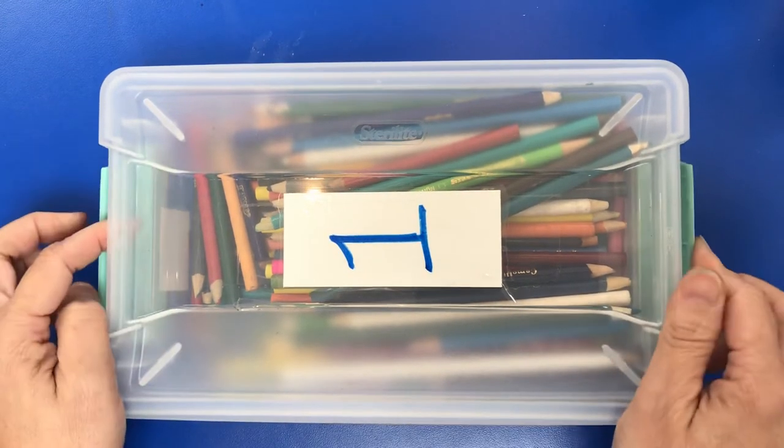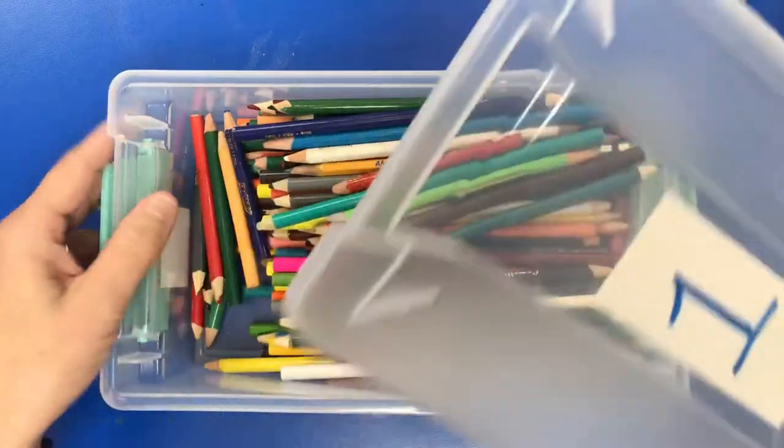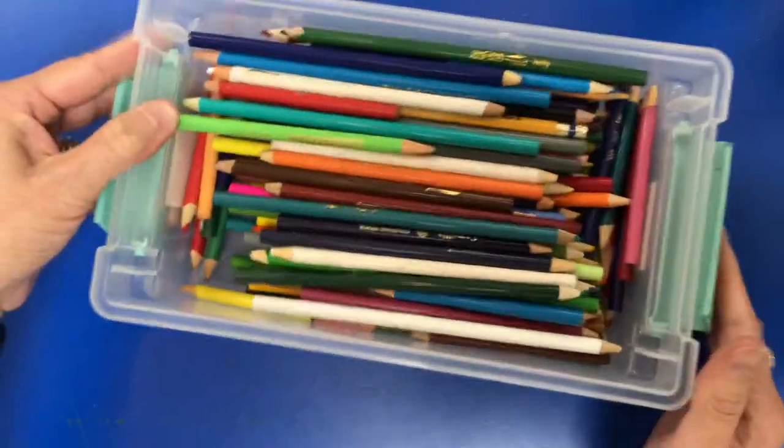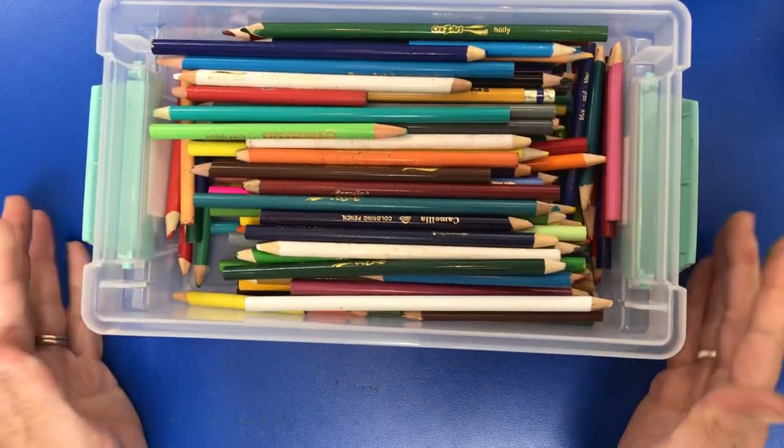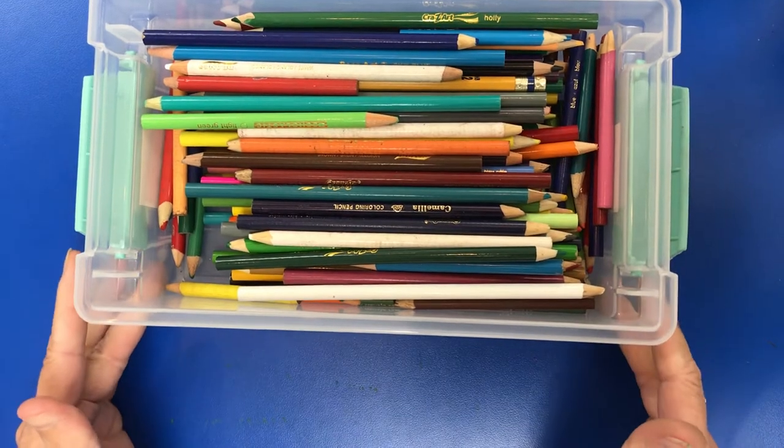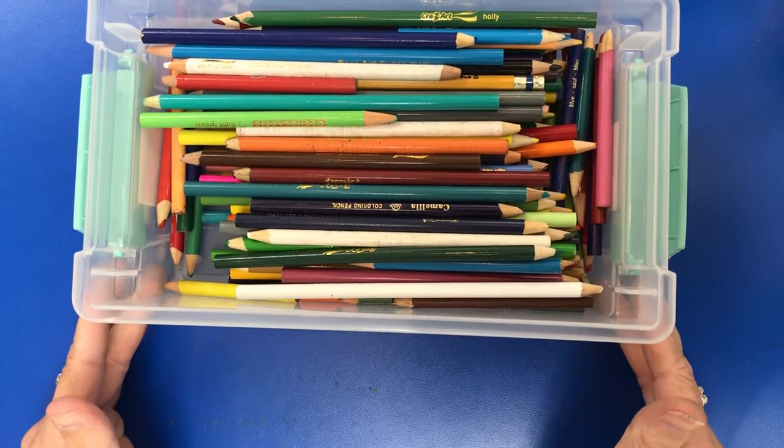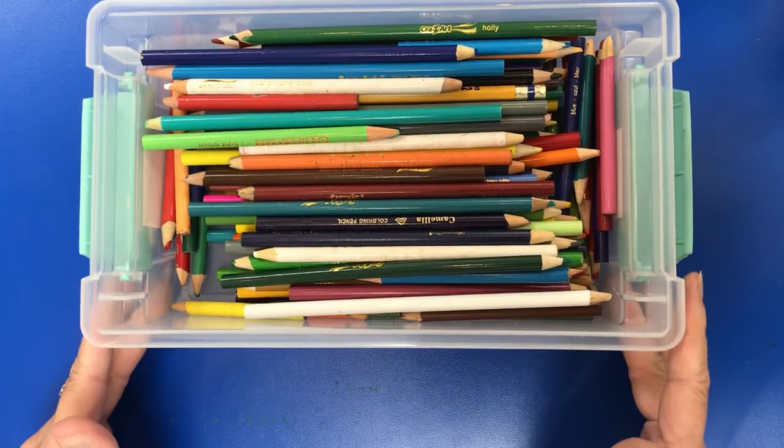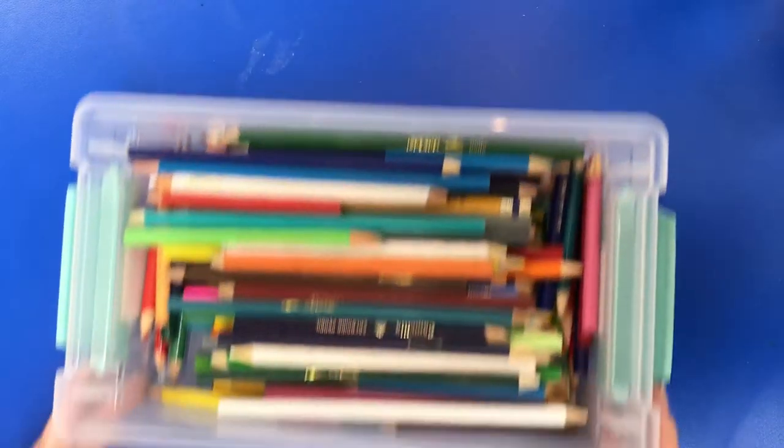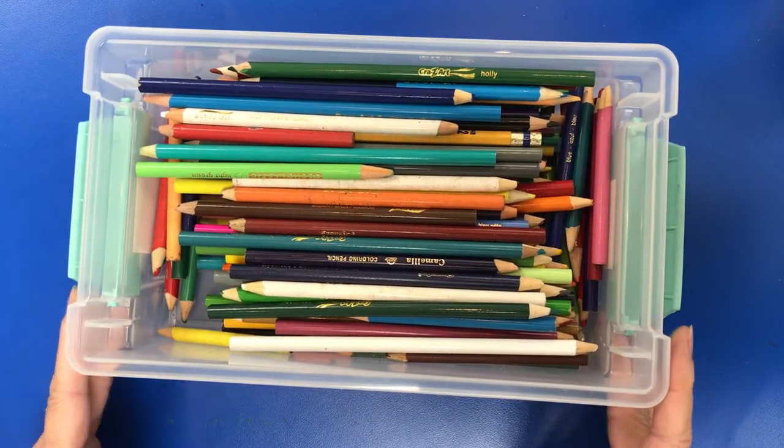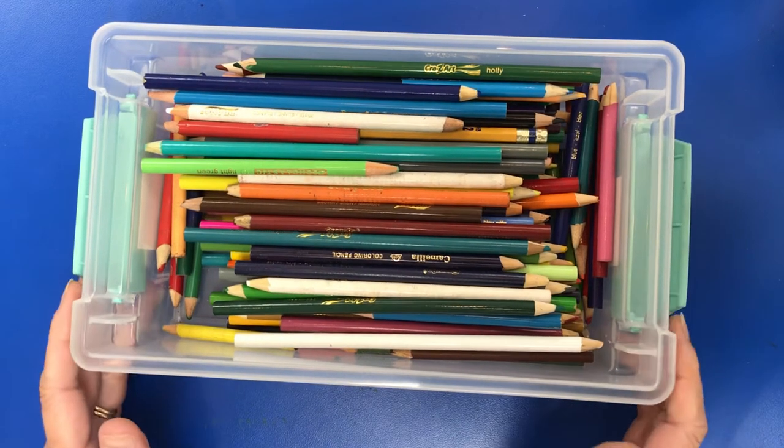When you get to your table, you're going to unlatch them and take the cover off. The cover is going to go underneath the bin. It's important that the cover goes underneath so we don't lose it. This also goes in the middle of your table for people to share. We're not hogging pencils - you need to share with others in your class.